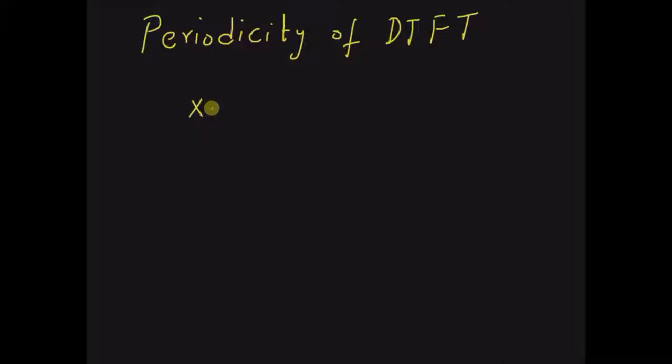The discrete Fourier transform of the form X(e^j(ω+2π)) is equal to X(e^jω).